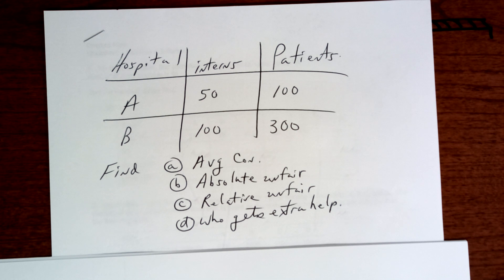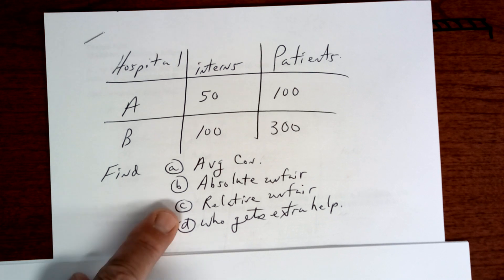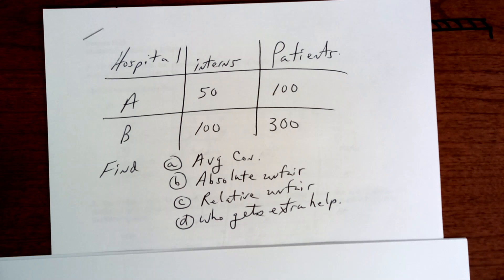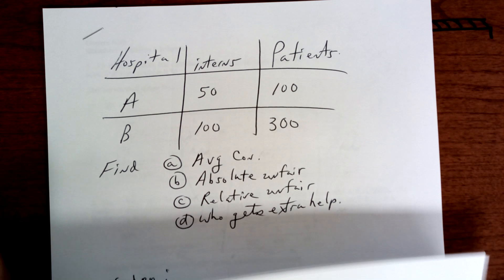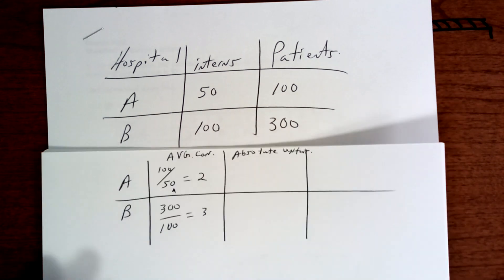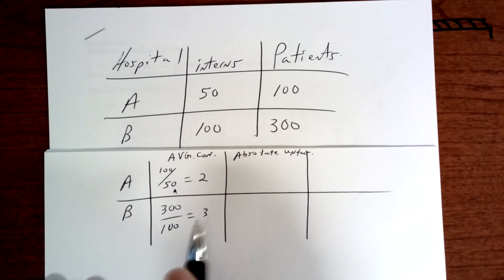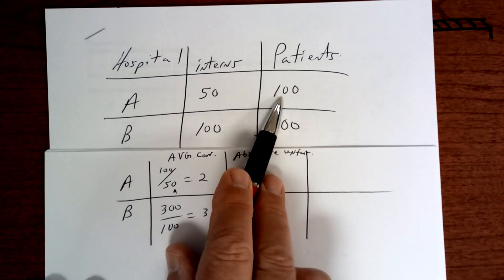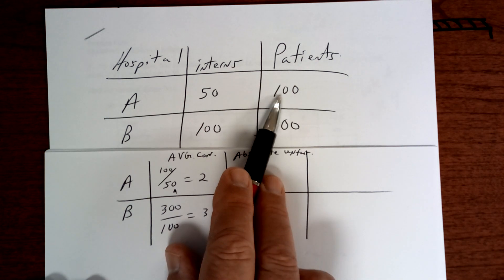Hello and good morning. We're going to answer these questions and here we go. So to get the average constituency, you take the number of patients divided by how much help you have.